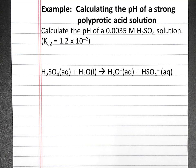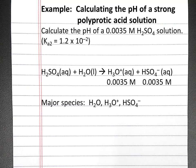Sulfuric acid is a strong acid, so the 0.0035 molar sulfuric acid will dissociate into 0.0035 molar hydronium ions and 0.0035 molar hydrogen sulfate ions. So our major species in this solution will be water, hydronium ions, and hydrogen sulfate.